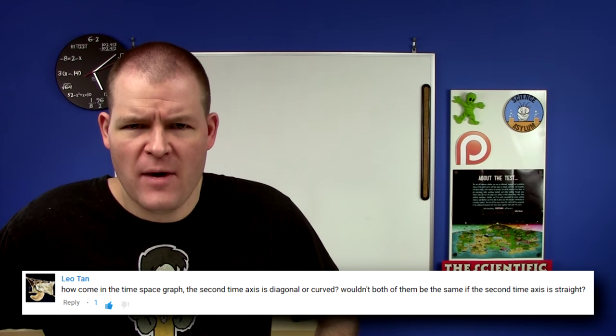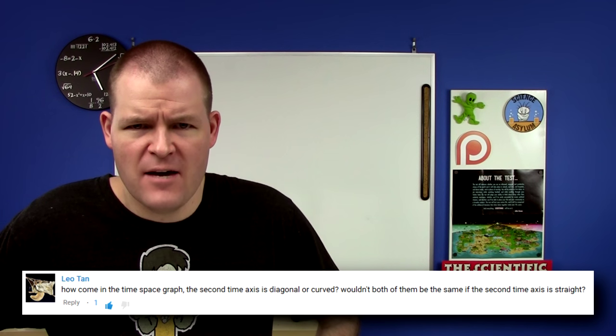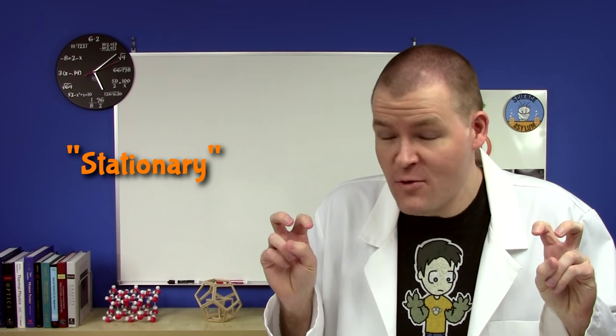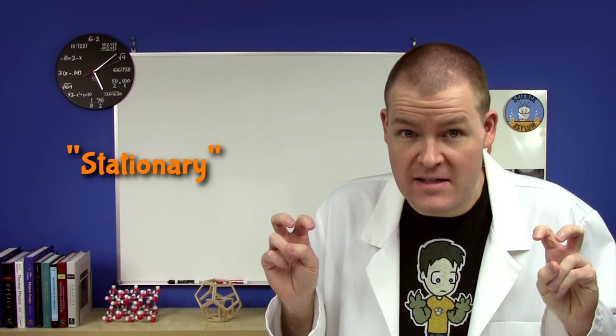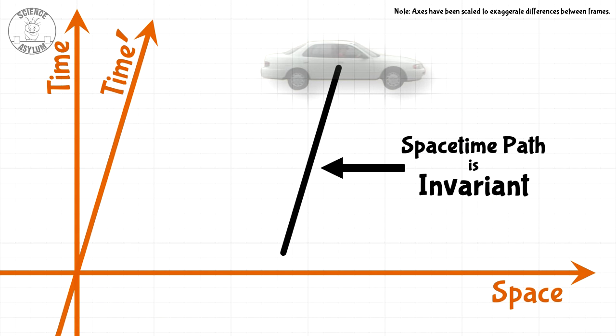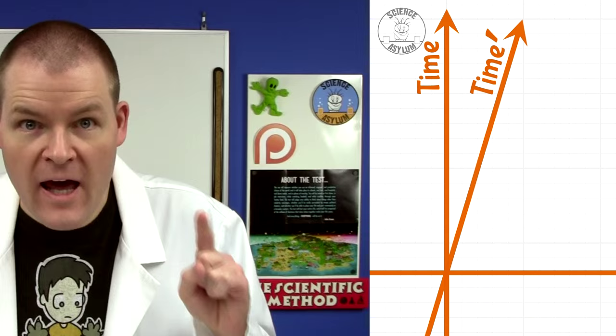In the space-time diagram, how come the second time axis is diagonal or curved? If something is stationary, then it's moving through time and not through space. In a space-time diagram, that's when your time axis lines up with your path — it has to by definition. That's what it means to be stationary.